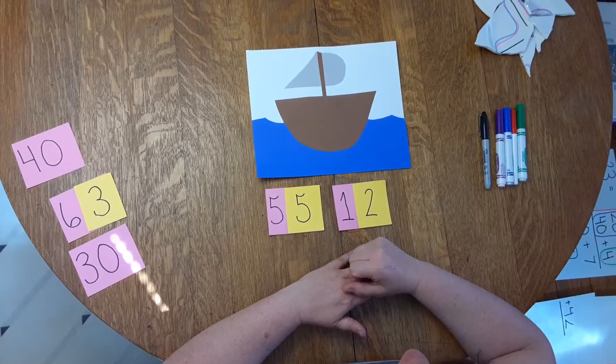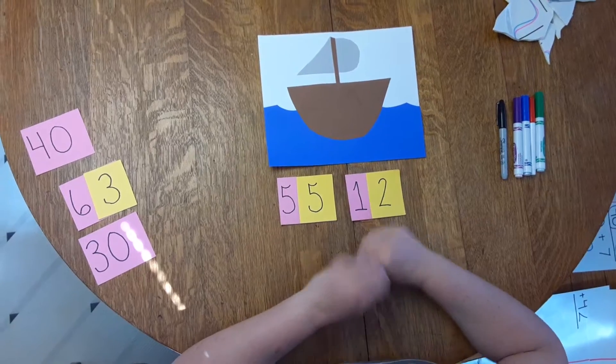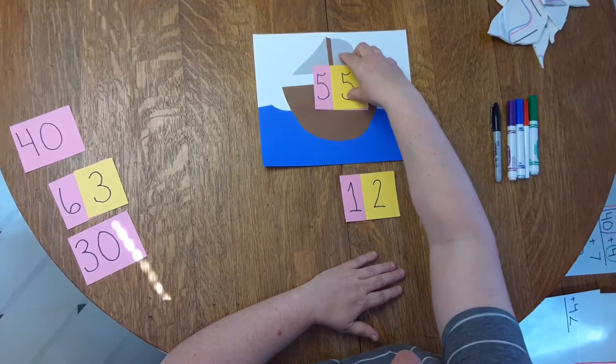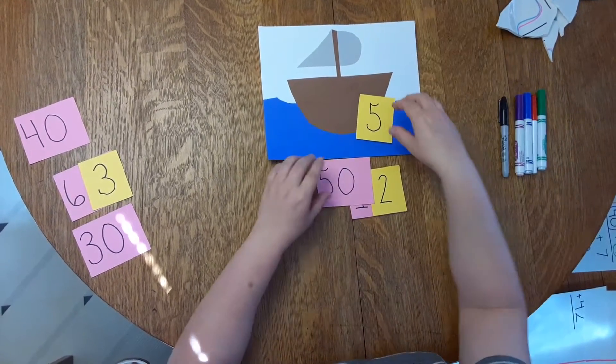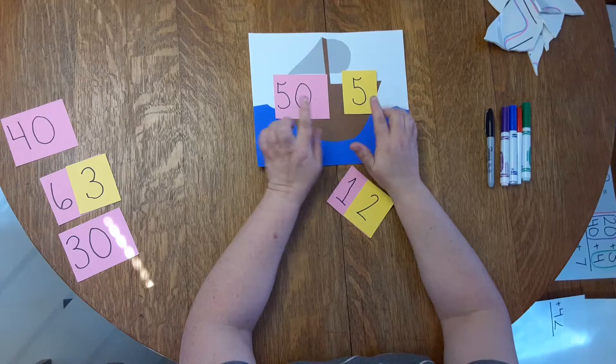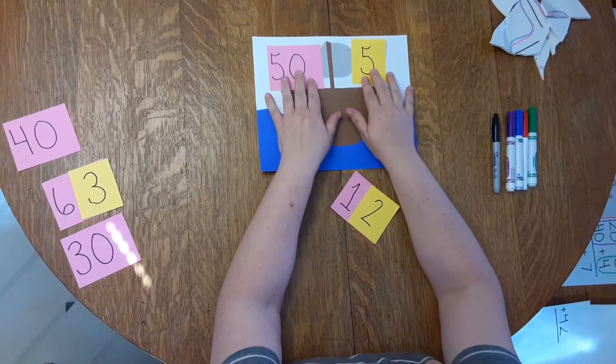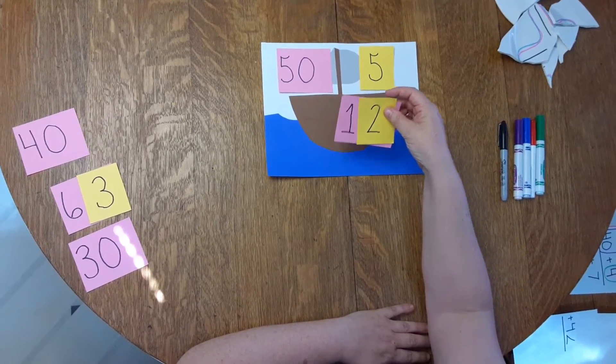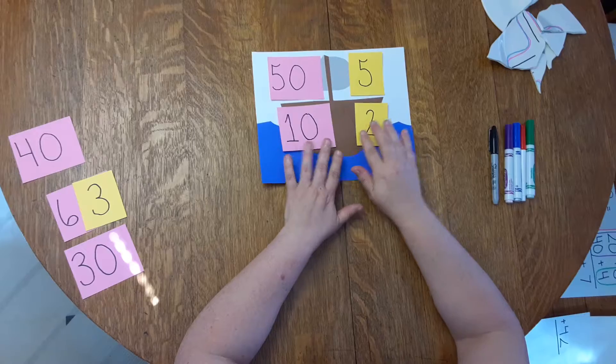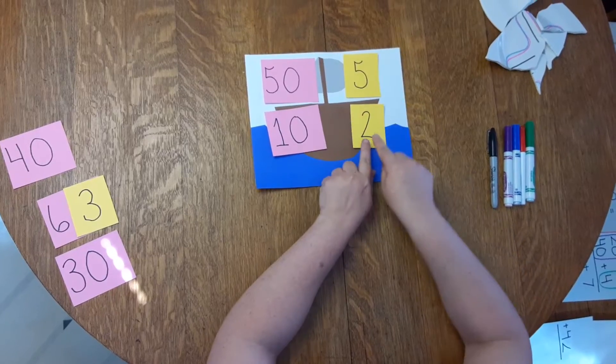Today we're going to talk about how would I add two-digit numbers together. So if I were to take 55 and I drop it on my pirate ship deck, what two numbers do I get? I get 50 plus 5. Now I'm going to take 12, and I'm going to drop it on my pirate ship deck. And what two numbers do I get? I get 10 plus 2.